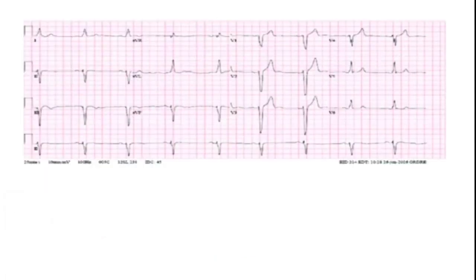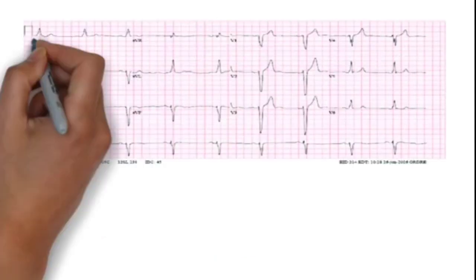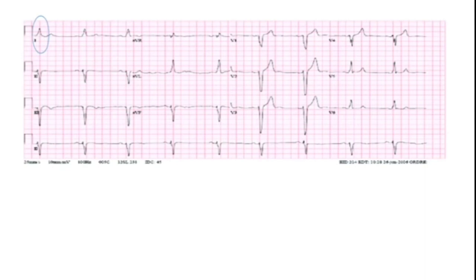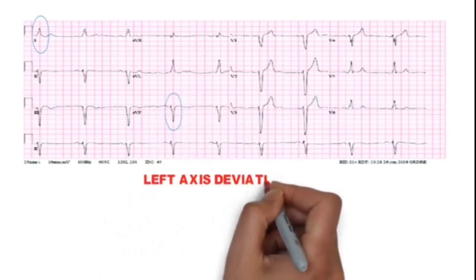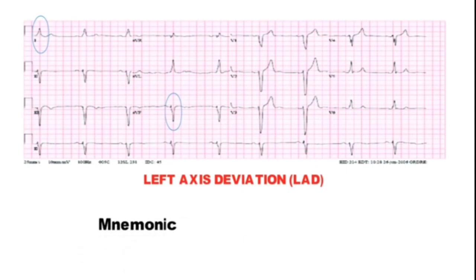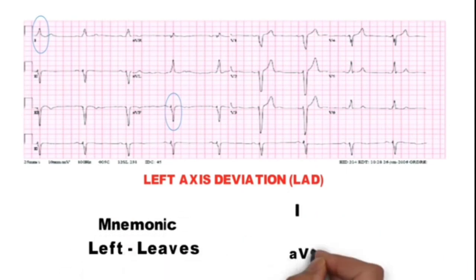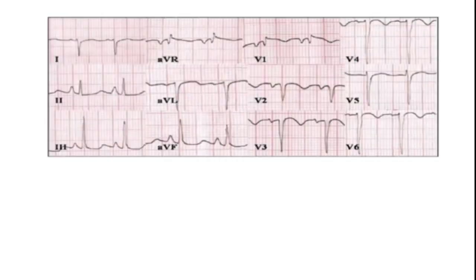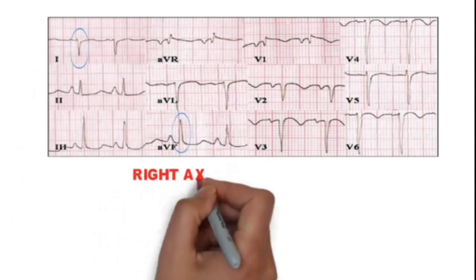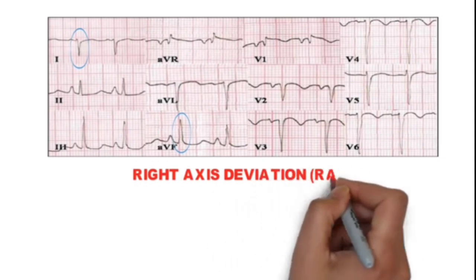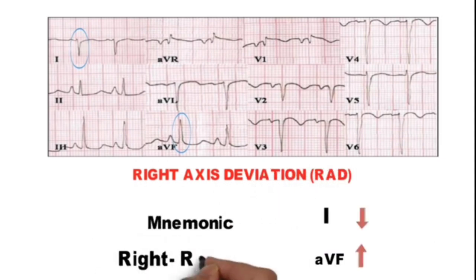Now look at this ECG - net QRS is positive in lead 1 and negative in AVF, showing left axis deviation. You can remember it by mnemonic 'left leaves'. Whereas in this ECG, net QRS is negative in lead 1 and positive in AVF - this is right axis deviation, remembered by mnemonic 'right returns'.